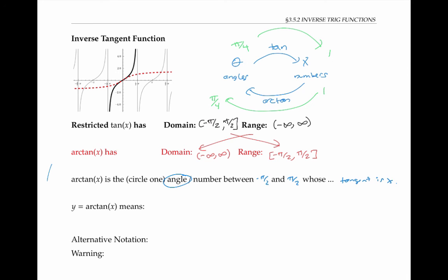In other words, y equals arc tan of x means that x is equal to tan of y. And y is within the specified range of negative pi over two and pi over two for arc tan.